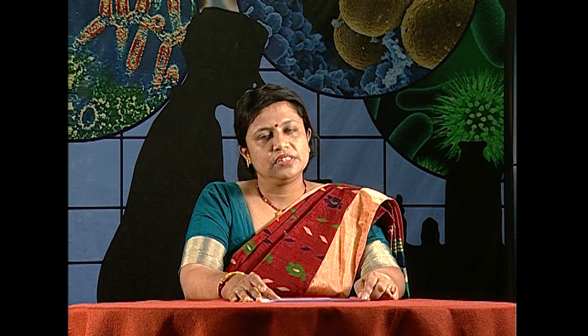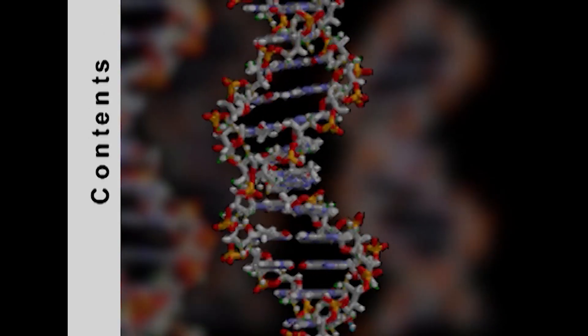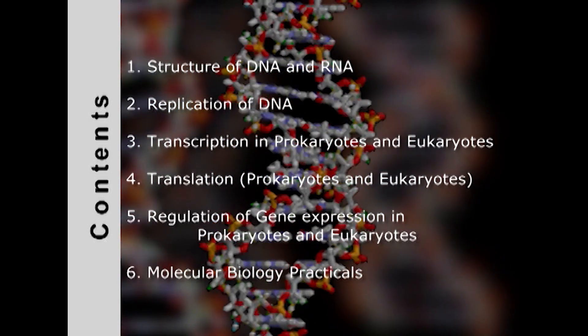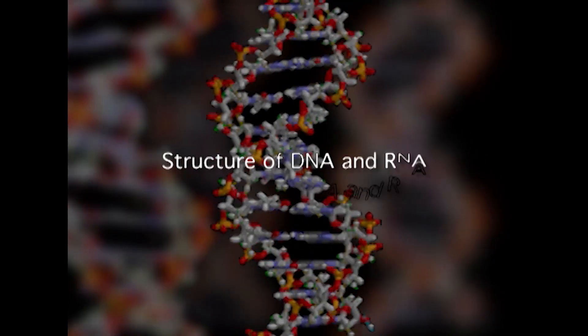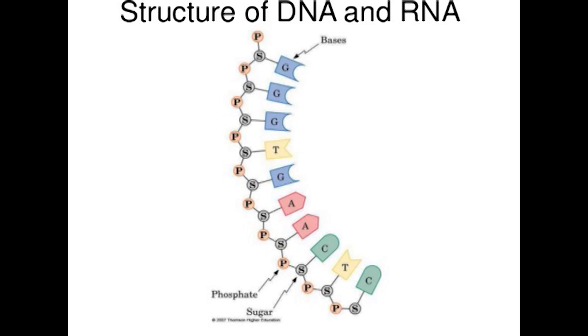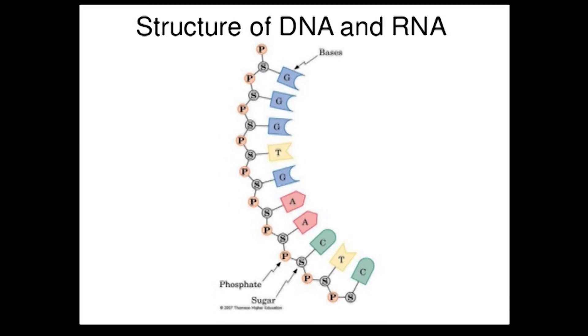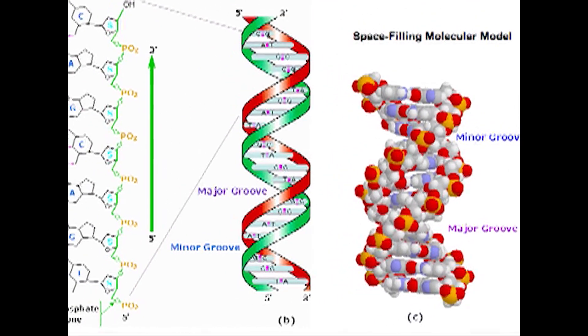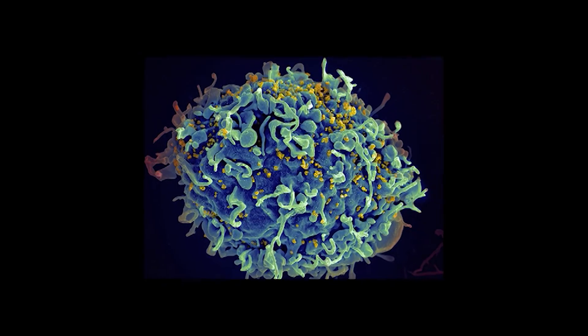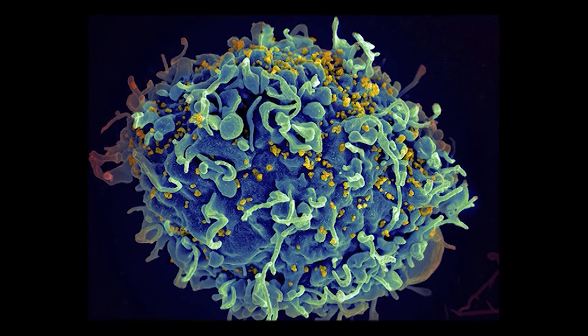This course precisely contains 35 lectures which have been divided into 6 modules. The first unit comprises the structure of DNA and RNA. In this unit, we will be studying the basics of molecular biology, the structure of DNA, RNA, and the primary, secondary, and tertiary structures of nucleic acids. Apart from this, we will be discussing the different model organisms that have helped us understand molecular biology in a better way.